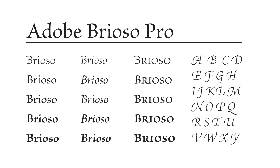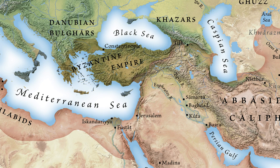My favorite serif typeface for maps is Adobe Brioso Pro. It has a calligraphic feel which gives a classy, vintage look and has a full set of swash capitals and other additional characters. The italic is especially attractive. Here it is on a few maps.